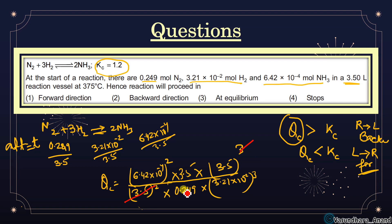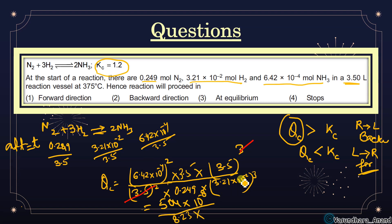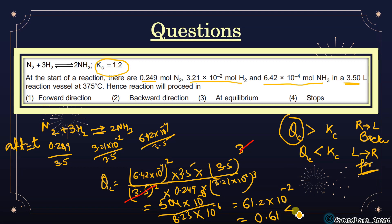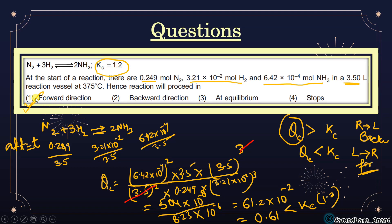Solving the Qc expression: the numerator gives (6.42×10⁻⁴)² = 10⁻⁸ scale, and the denominator gives 8.23×10⁻² scale (10⁻⁶ for the cubed term). After calculation, Qc ≈ 0.61. Since Qc (0.61) < Kc (1.2), the reaction moves in the forward direction (left to right). Forward direction is the correct answer.